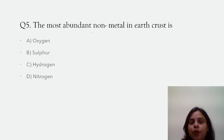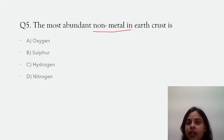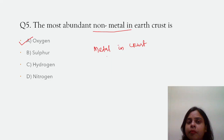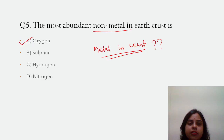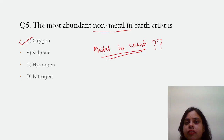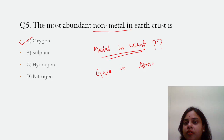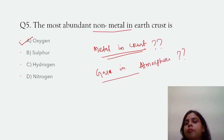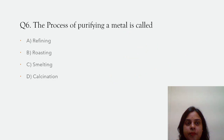The most abundant non-metal in earth's crust — the options are oxygen, sulfur, hydrogen, and nitrogen. All are non-metals. The correct answer is oxygen. It is the most abundant non-metal in earth's crust. Also, can you tell me what is the most abundant metal in earth's crust, and what is the most abundant gas in the atmosphere? Comment your answers in the comment box.